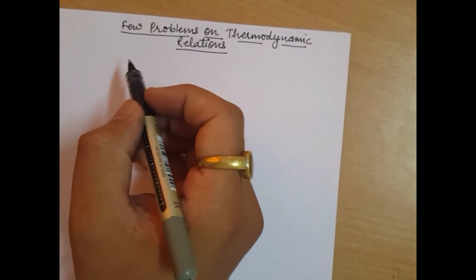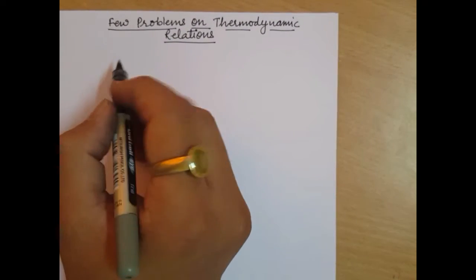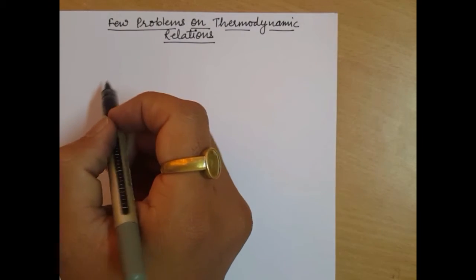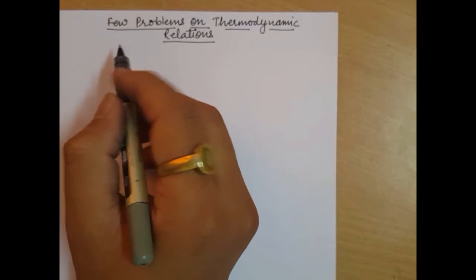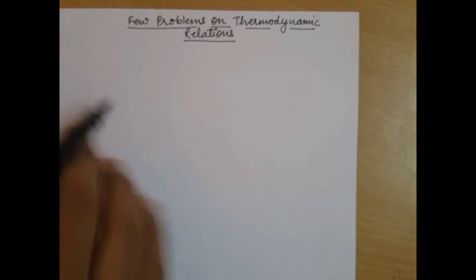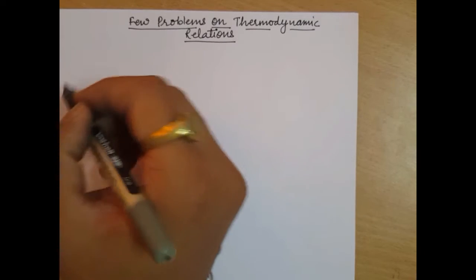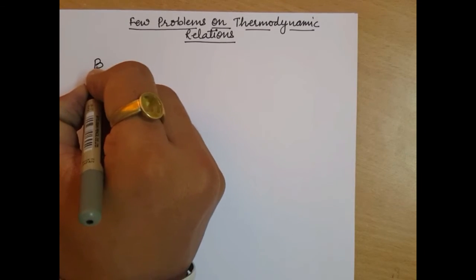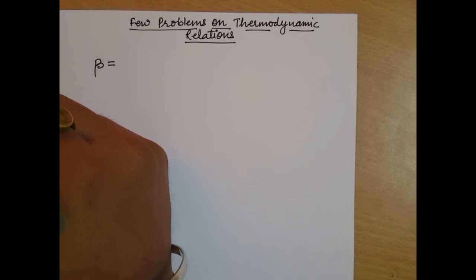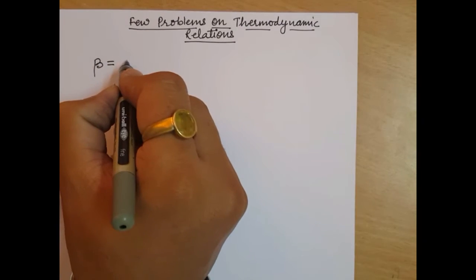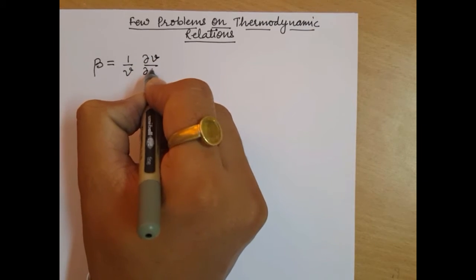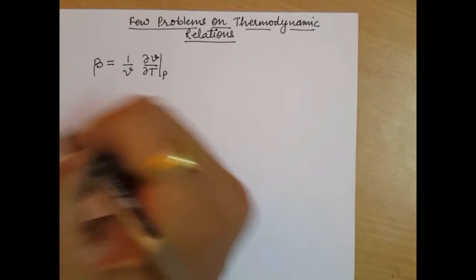Good morning friends, my name is Pankaj Dhumka. Today we will be solving a few problems on thermodynamic relations. Before we start, I would like to tell you about a few factors, just like beta. Beta is the coefficient of expansion and it is defined as 1 upon V, del V by del T at constant pressure.